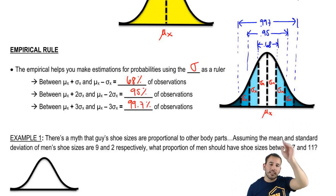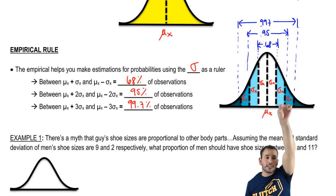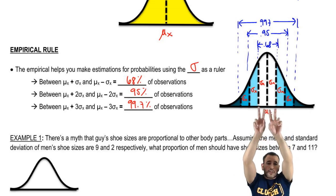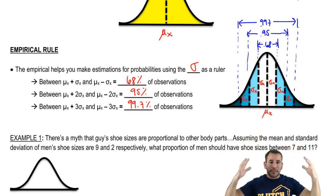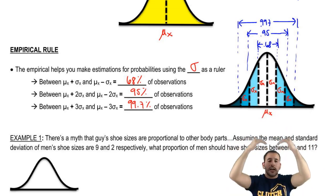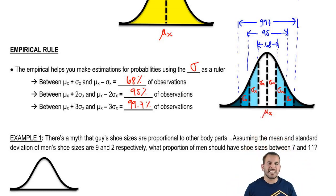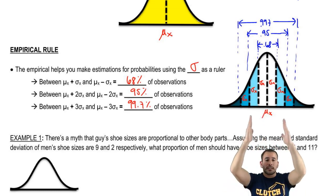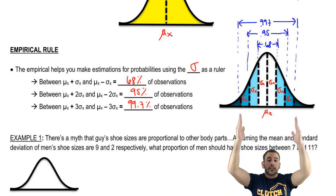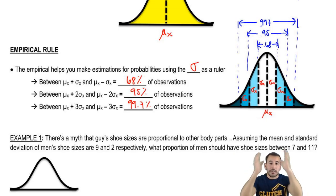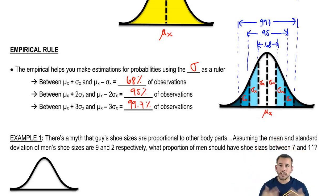Area corresponds to probability. The area near the tails is smaller than near the center because the normal distribution is concentrated around the mean. So even though 68% falls within one standard deviation, moving to the next standard deviation doesn't add much — and from two to three standard deviations, the percentage only goes up by about 4.7%.